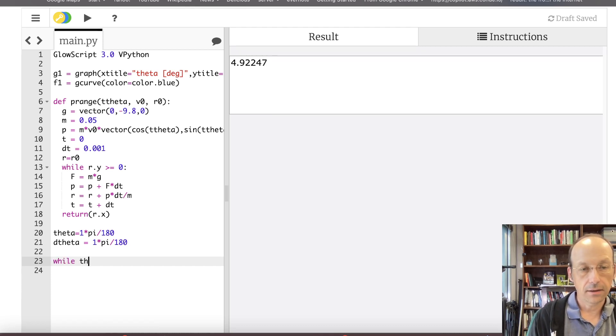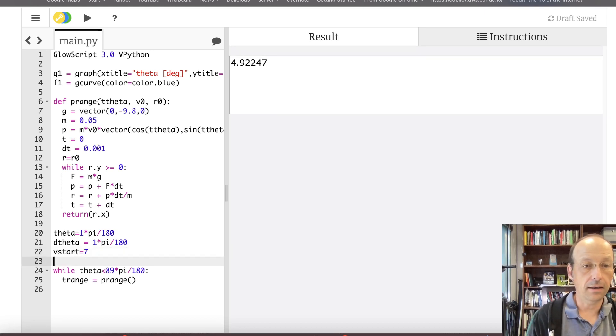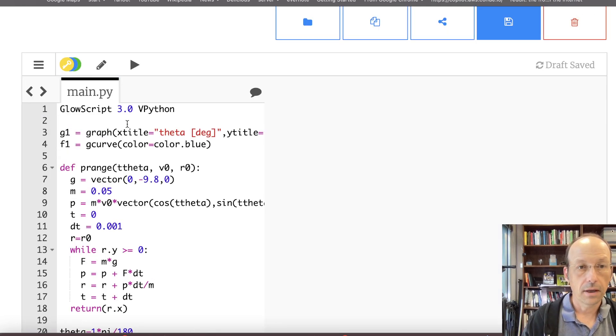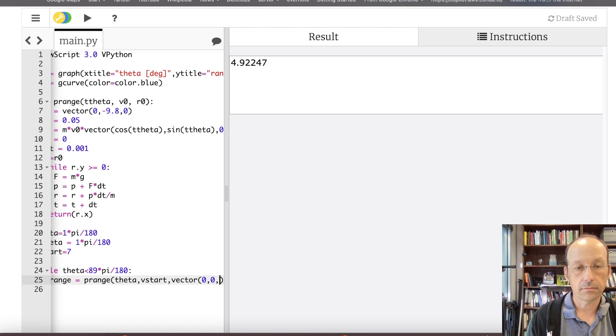I think we're good. So now I'm going to say while theta is less than 89 times pi divided by 180. I think there is a way you can define angles in degrees, but I don't remember how to do it. The first thing I can do is find the range. So I'm going to say t_range equals p_range. I do need a V0. V_start equals seven. The mass is in the function, which is kind of weird, but whatever. So I need to give it an angle. I have to give it initial velocity and initial position. So let's say the initial velocity is going to be V_start, and then the initial position is going to be the vector zero zero zero.